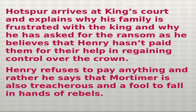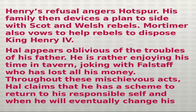Hotspur arrives at the King's court and explains why his family is frustrated, and why he has asked for ransom — believing Henry hasn't paid them for their help in regaining control of the crown. Henry refuses to pay anything and says that Mortimer is also treacherous. Henry's refusal angers Hotspur. His family then devises a plan to side with the Scottish and Welsh rebels. Mortimer also votes to help the rebels depose King Henry IV.